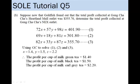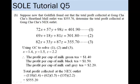So to determine the total profit collected at Gong Cha Cha's NEX outlet, we just take 118, which is the number of cups of milk green tea sold at the outlet, multiplied by 1.4, plus number of cups of milk black tea sold at the outlet, which is 62, multiplied by 1.5, plus number of cups of milk earl grey tea, which is 135, multiplied by $2.20. And that's how we end up with the answer of $555.20.